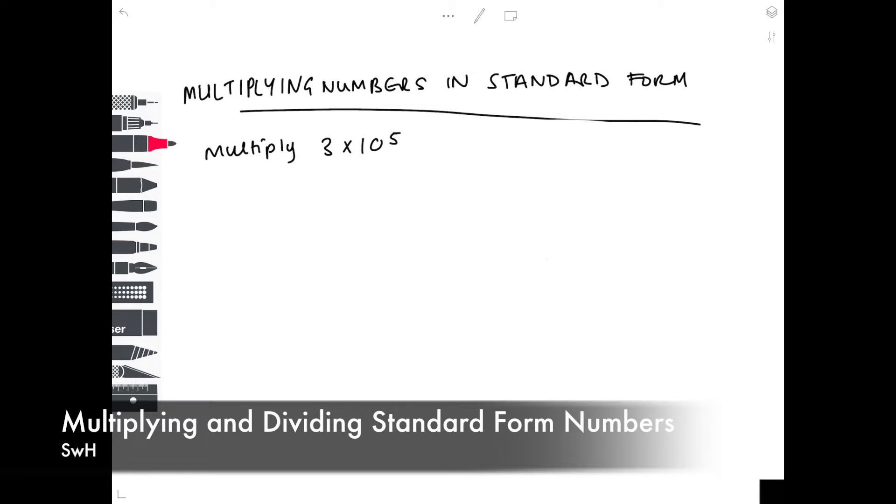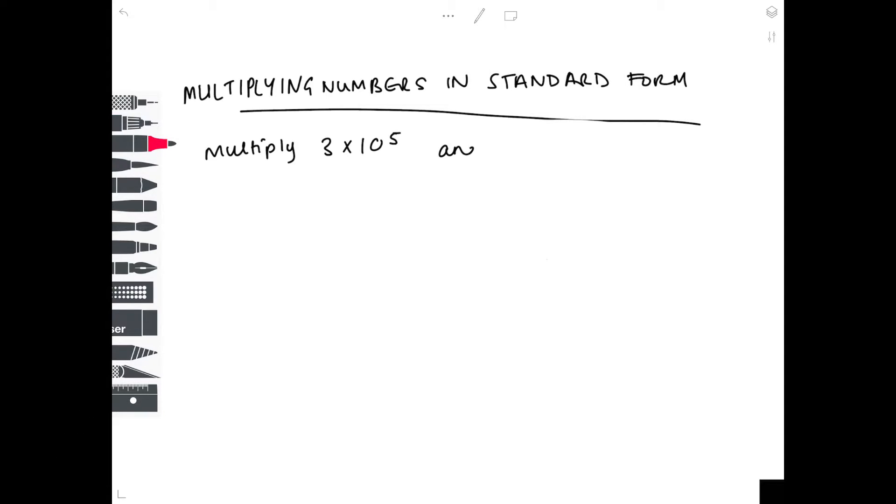So in our example, we're doing 3 times 10 to the 5, and we're multiplying it with 2.5 times 10 to the 7.